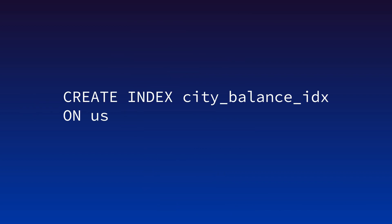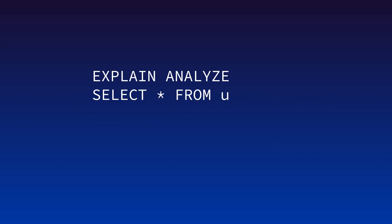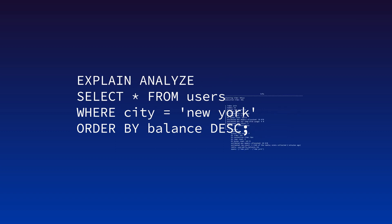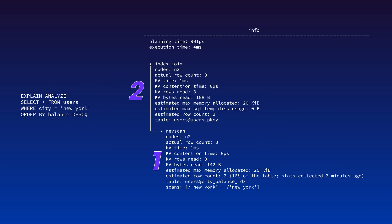For queries that are going to be run frequently, we can make this even more efficient by creating a multi-column index. This query requires data from both the city and balance columns, so let's create an index that includes both of them. When we analyze the results now, we can see that we've reduced it to a two-step process, and we're still only scanning the New York rows. This is a huge improvement in efficiency, and while you might not notice it in a table with 10 rows, you will definitely notice it with larger tables when you look at the compute resources your database is consuming.